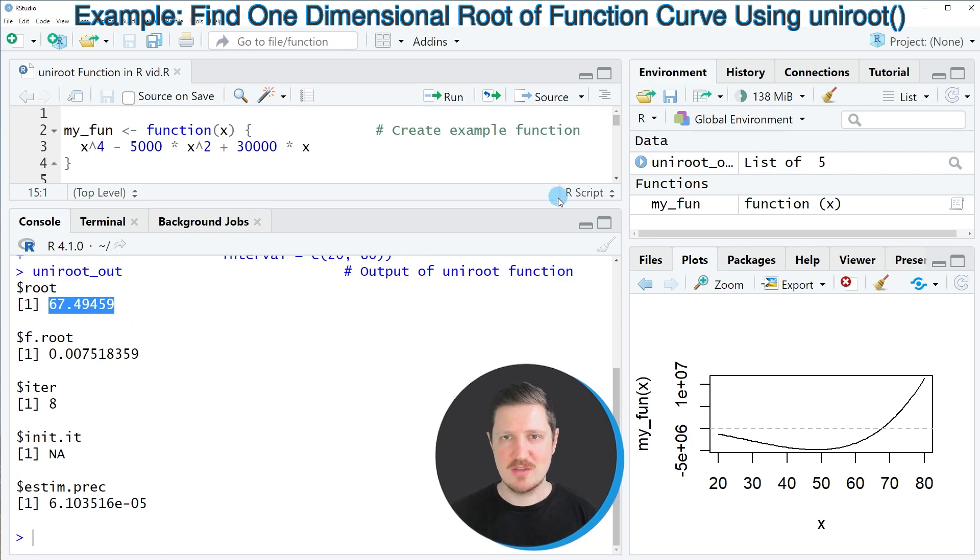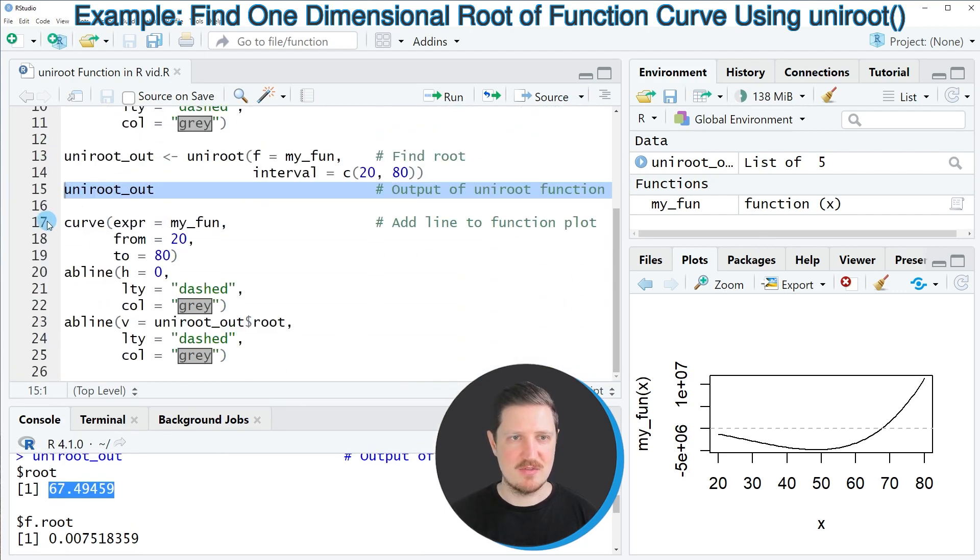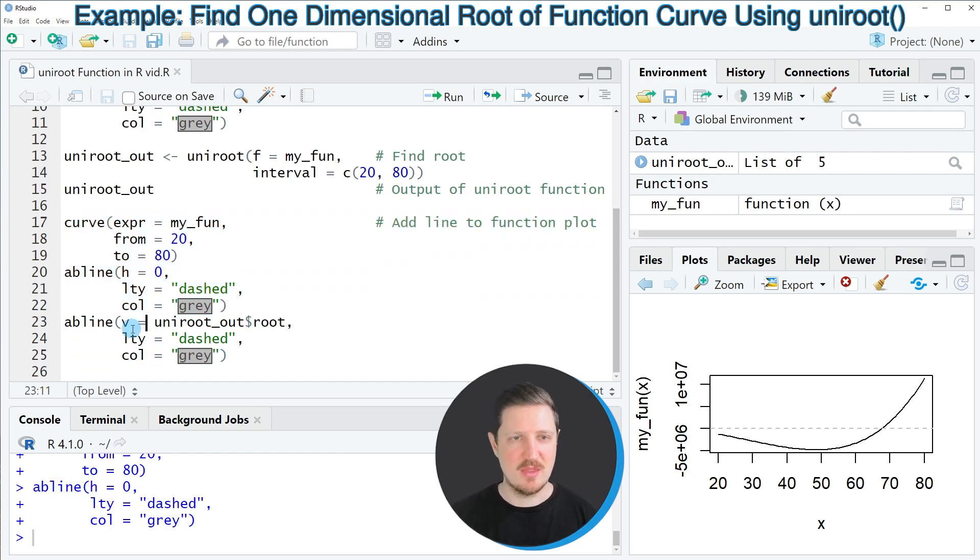We can also visualize that in our graphic as you can see in lines 17 to 25 of the code. In lines 17 to 22, I'm recreating our graphic. Then in lines 23 to 25 of the code, I'm using the uniroute_out object that I have created before to add a vertical line at the root position to our graph. After running lines 23 to 25 of the code, you can see that this line is added at the position of our root.